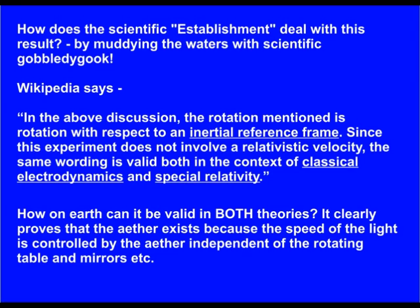How on earth can it be valid in both theories? It clearly proves that the ether exists because the speed of the light is controlled by the ether, independent of the rotating table and mirrors.